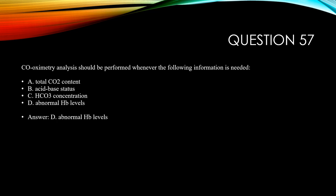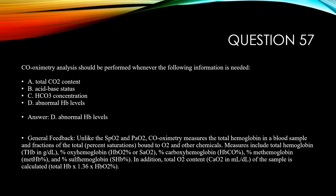The answer is D, abnormal hemoglobin levels. Unlike SpO2 and PaO2, co-oximetry measures total hemoglobin in a blood sample and fractions of total percent saturations bound to hemoglobin and other chemicals. Measures include total hemoglobin, oxyhemoglobin, carboxyhemoglobin, methemoglobin, and others including sulfhemoglobin. In addition, total O2 content (CaO2) in milliliters per deciliter of the sample is calculated.